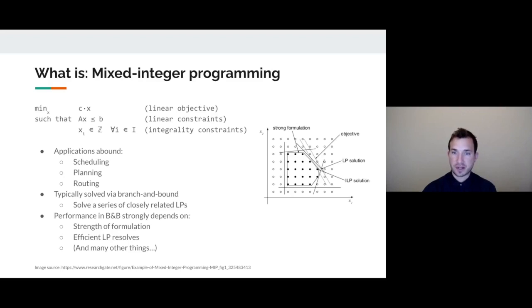Just to make sure everyone's on the same page, I'll briefly describe what Mixed-Integer Programming, or MIP, is. This is a class of optimization problems with linear objectives, linear constraints, and integrality constraints on some or all of your decision variables.